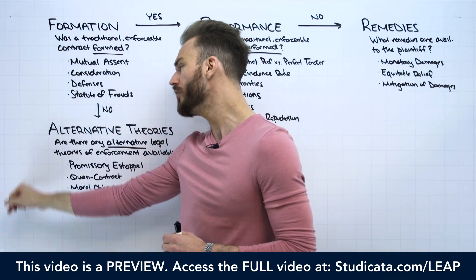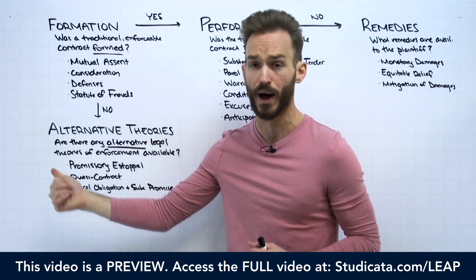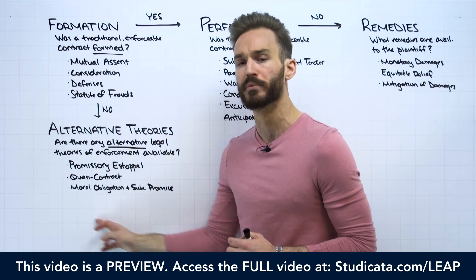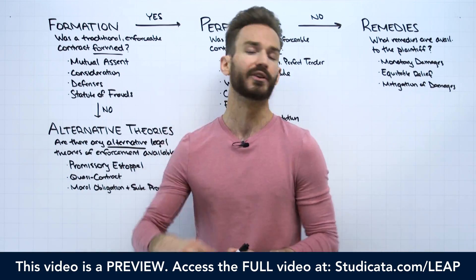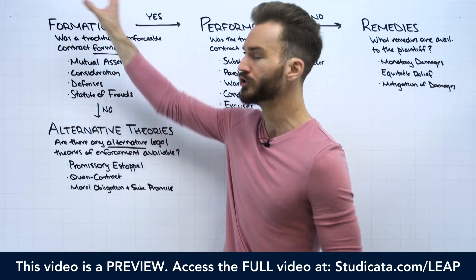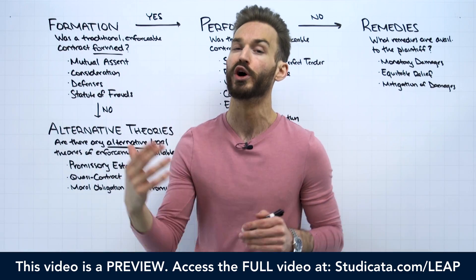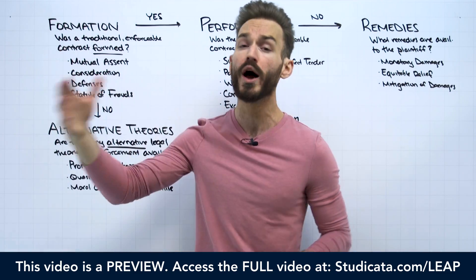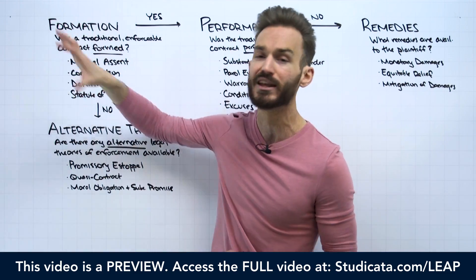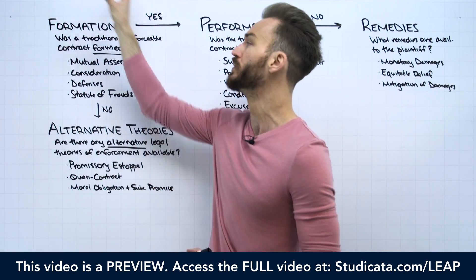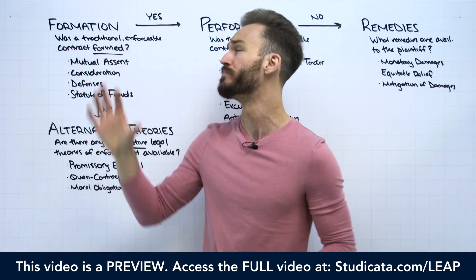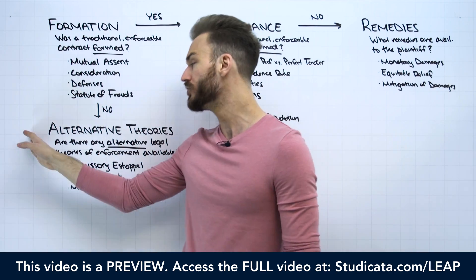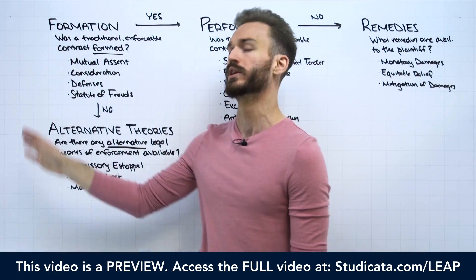But we also have all these alternative legal theories. We have things like promissory estoppel, quasi-contract, and a moral obligation plus a subsequent promise. It's important to recognize from the very beginning that contract law should really be called enforceable agreements, because the traditional enforceable contract is one way — and this is what we're going to spend 90% of our time talking about. In law school, this is what you spend almost all of your time talking about. On the bar exam, this is what's primarily tested. But we do also study these alternative ways you can enforce an agreement.